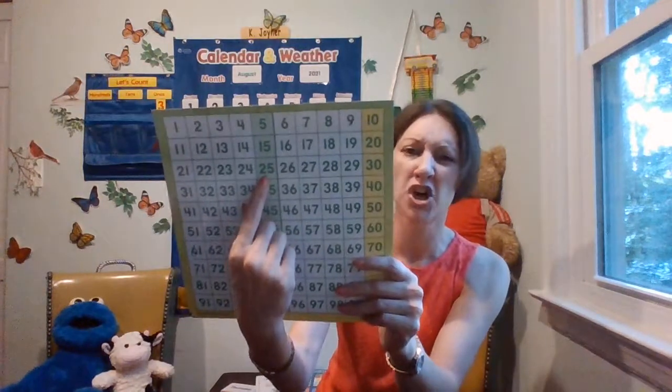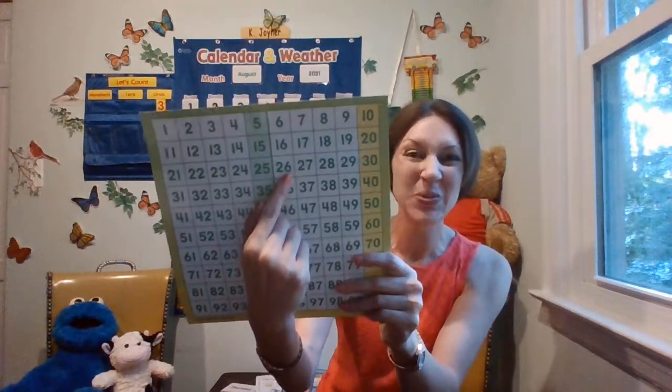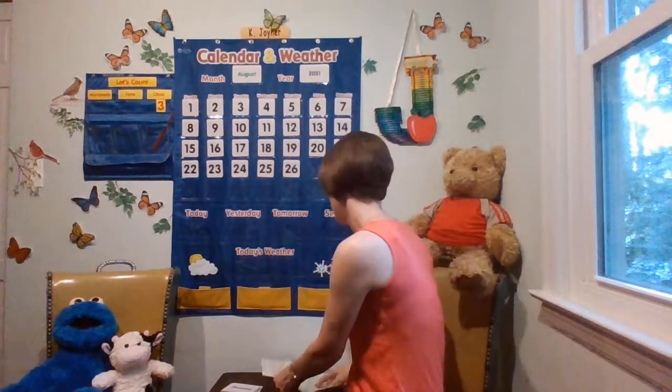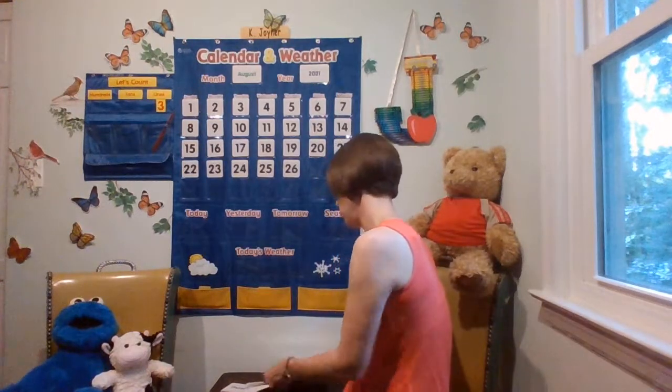What number comes after 25? Let's hop on our hundreds chart and see — 26! If you remembered that the next number is 26, you're right. Kiss your brain! It's August 26, 2021. Let's put this on the calendar. And what is today? Do you remember the day of the week from the message?